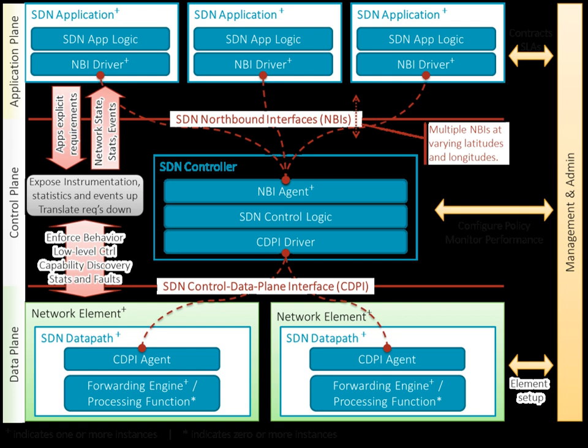Changing traffic patterns within enterprise data centers have shifted significantly. In contrast to traditional client-server applications where communication occurs between one client and one server, today's applications access different databases and servers, creating East-West machine-to-machine traffic before returning data in the classic North-South pattern. Users are also changing traffic patterns by pushing for access to corporate content and applications from any device, connecting from anywhere at any time.